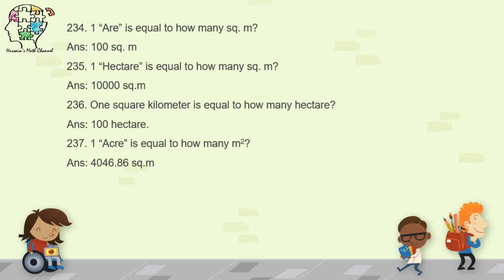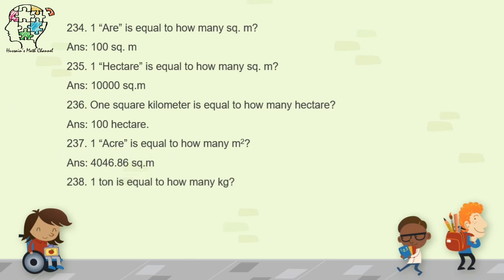Question 238: one ton is equal to how many kilograms? One ton and one metric ton are the same thing. One thousand kilograms equals one ton.